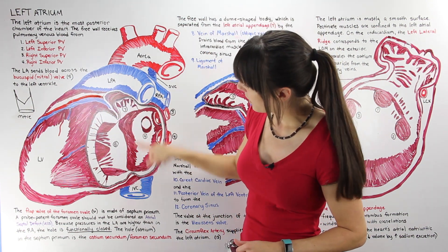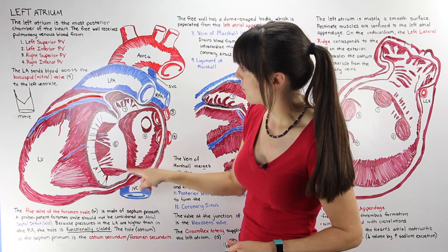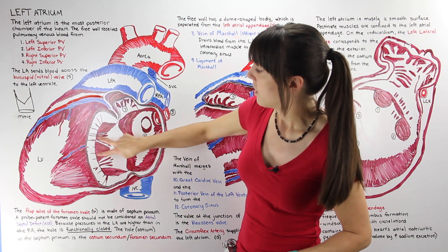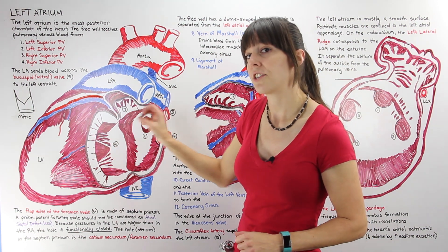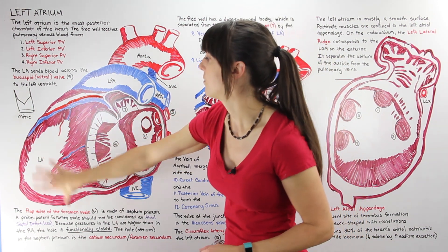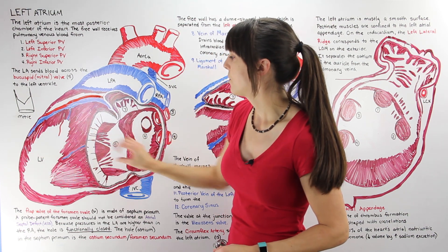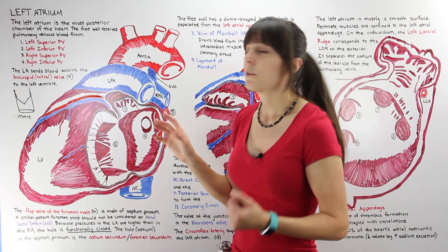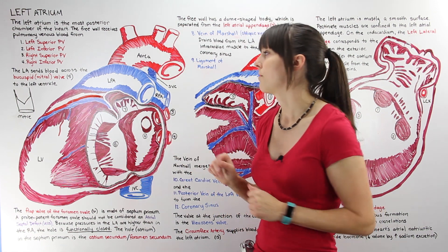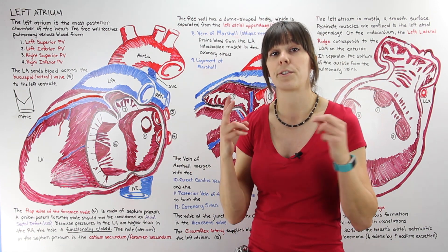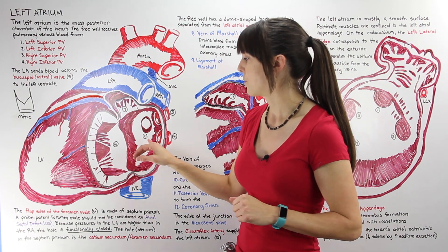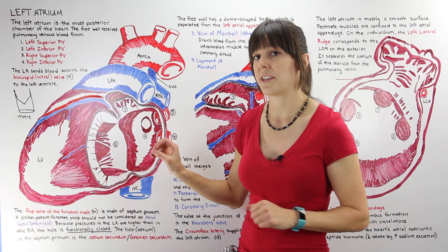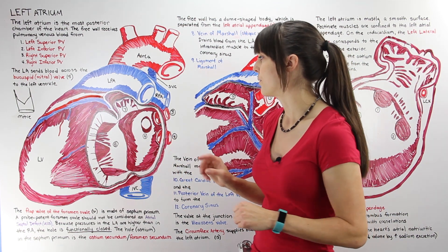If you look at the mitral valve — the structure labeled number five — the two chordae tendineae attached to the papillary muscles in the left ventricle are like the tops of the mitre of the bishop's hat. You'll probably hear me call it the bicuspid valve most of the time, which means two cusps — in this case the anterior and posterior cusps. We'll focus on that in a future video.